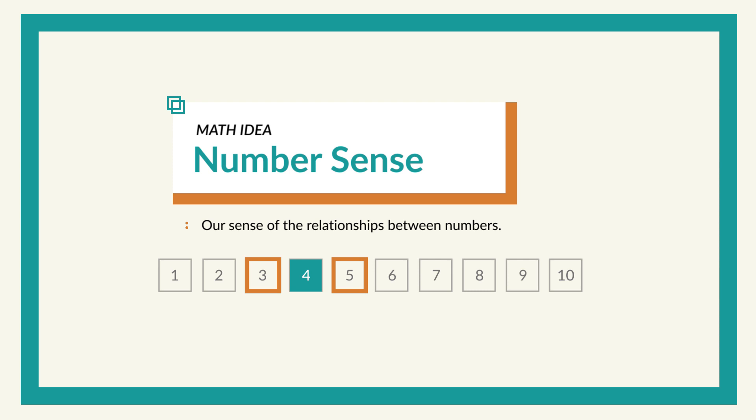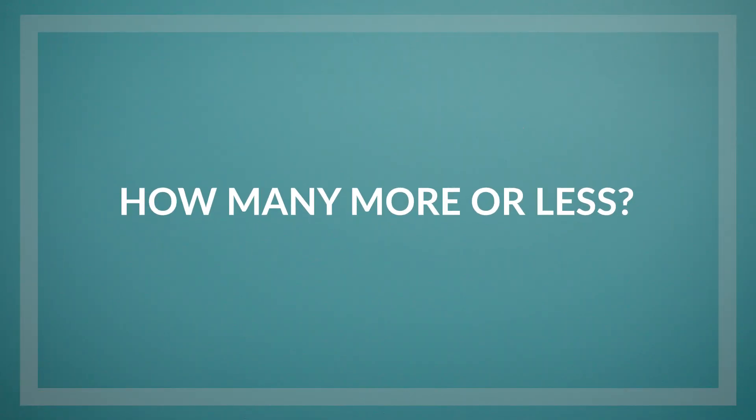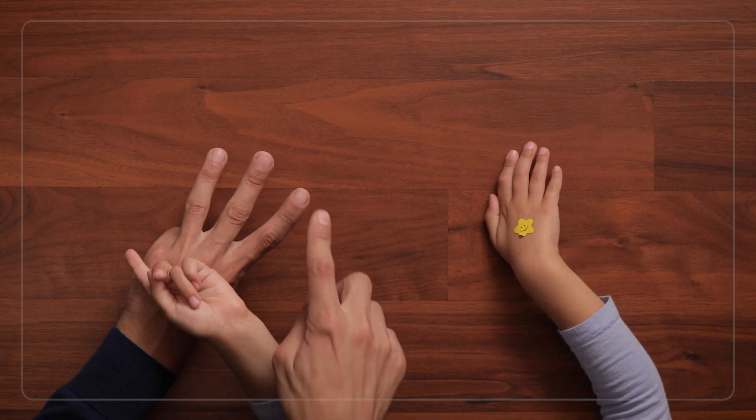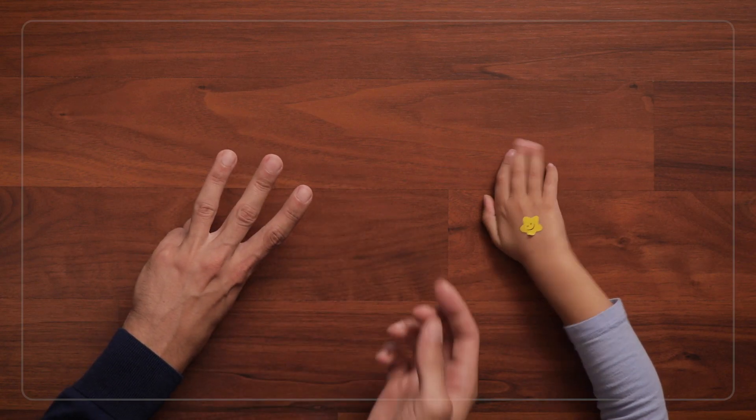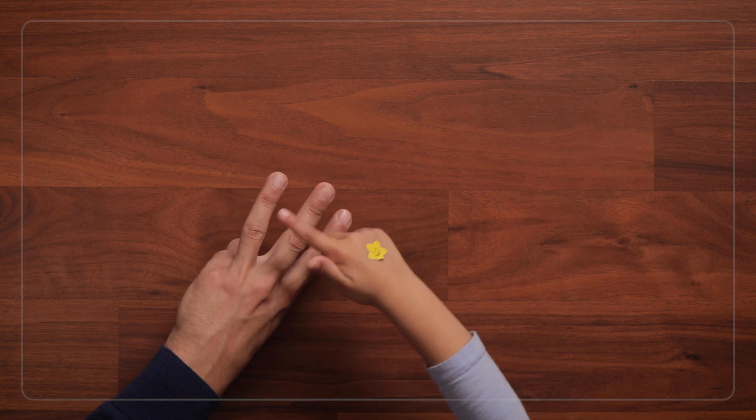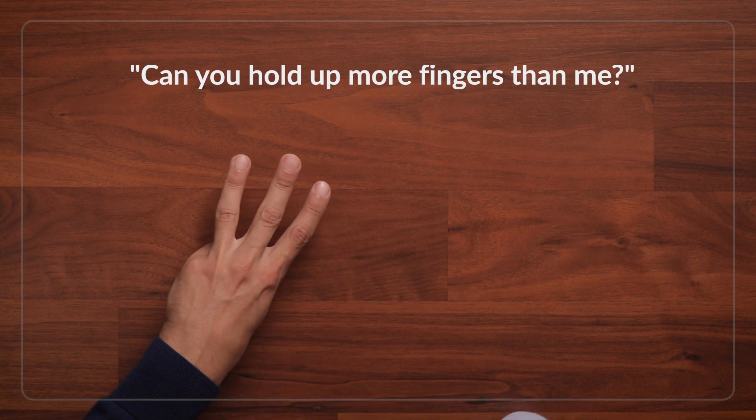Then, when kids are doing well with 1 more and 1 less, you can challenge them by asking them to figure out how many more fingers they are holding up than you are holding up. So if I hold up 3, I'll first ask, Can you hold up more fingers than me?